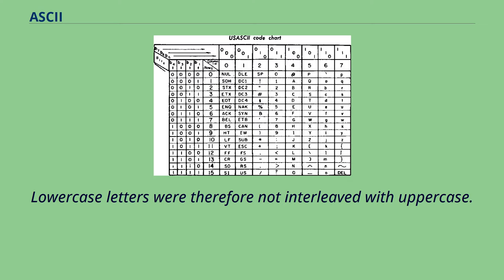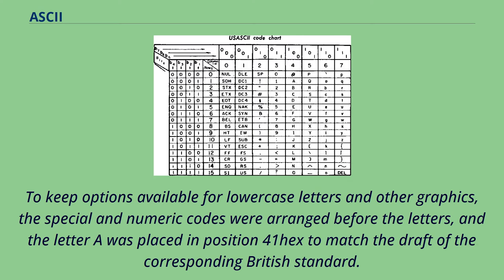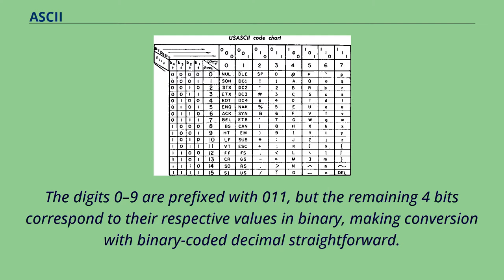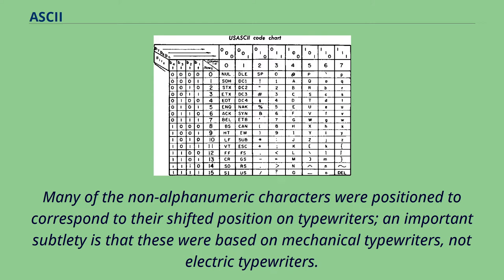Lowercase letters were therefore not interleaved with uppercase. To keep options available for lowercase letters and other graphics, the special and numeric codes were arranged before the letters, and the letter A was placed in position 41 hex to match the draft of the corresponding British standard. The digits 0 to 9 are prefixed with 011, but the remaining 4 bits correspond to their respective values in binary, making conversion with binary-coded decimal straightforward. Many of the non-alphanumeric characters were positioned to correspond to their shifted position on typewriters. An important subtlety is that these were based on mechanical typewriters, not electric typewriters.